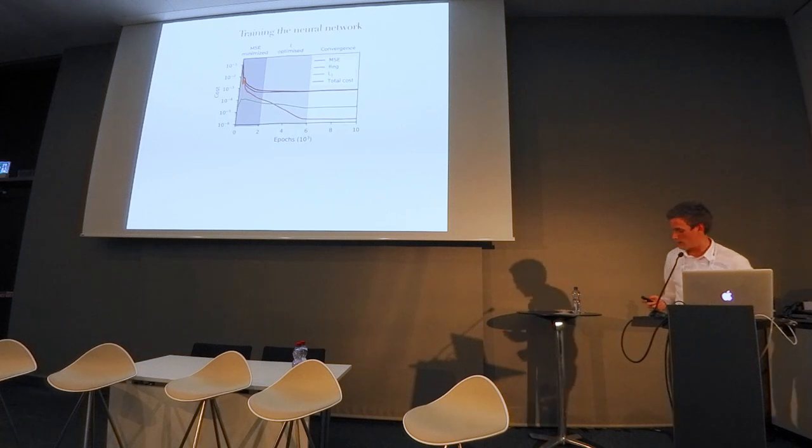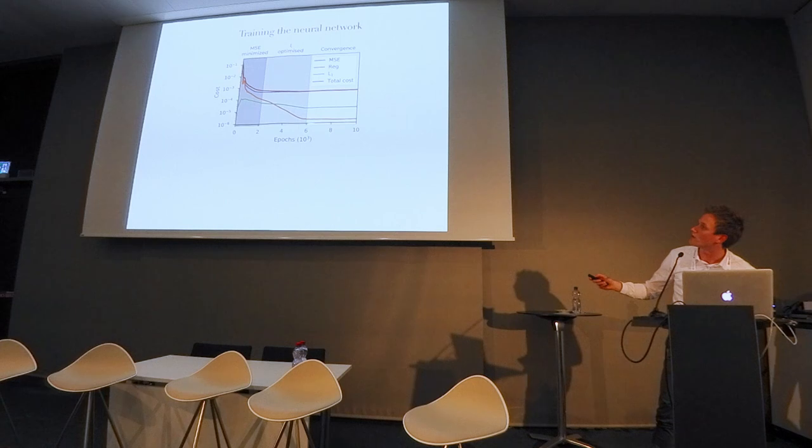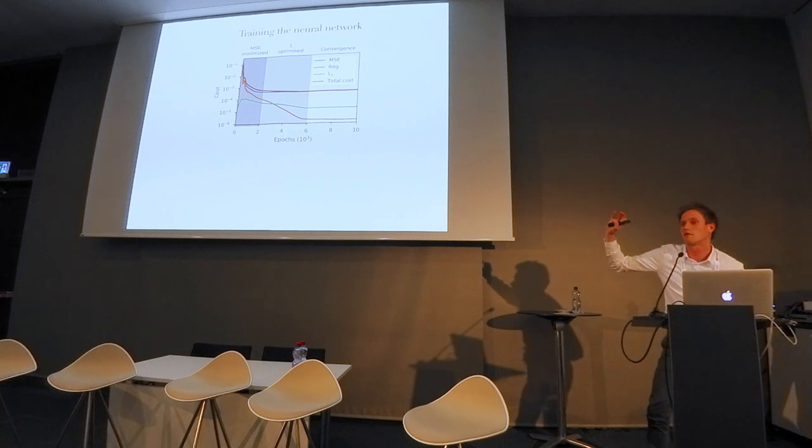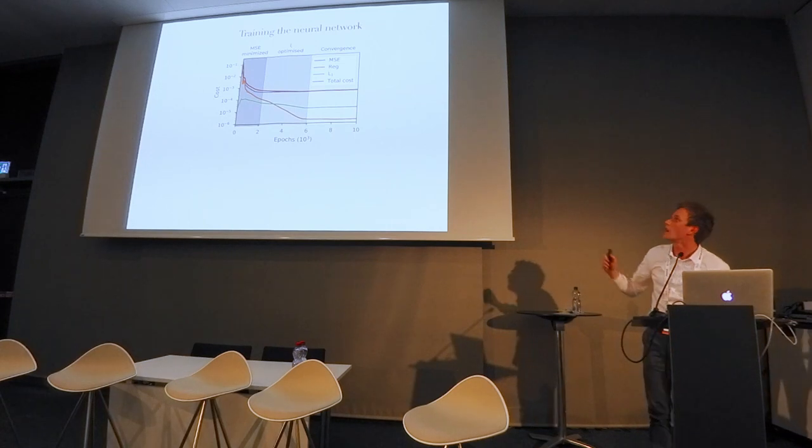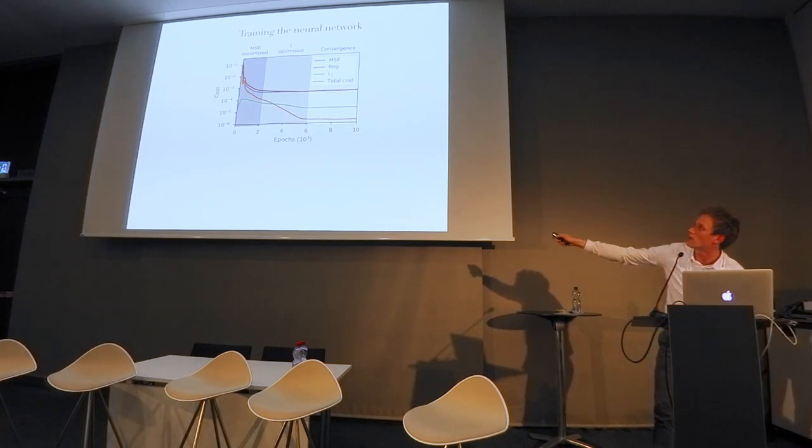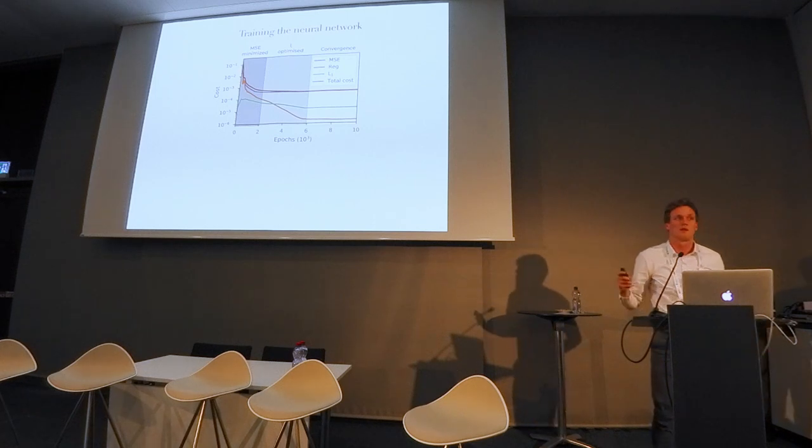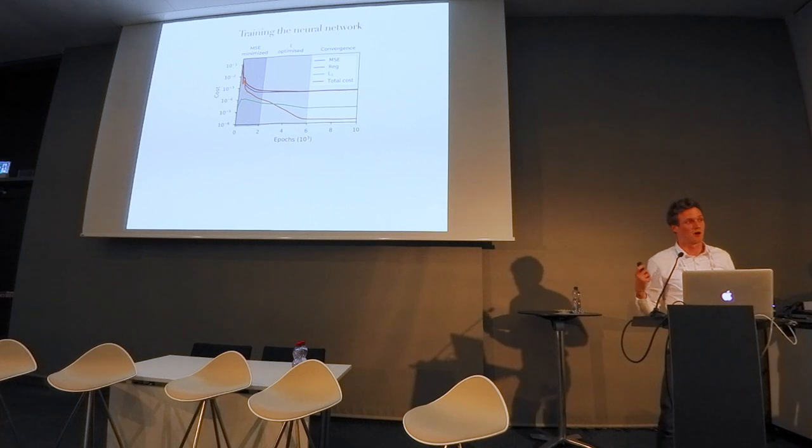What happens during training? Here I plot the different cost functions as function of the number of training epochs. Let's focus on two lines: the blue line which is the MSE, the mean square error part, and the orange line which is the regression part. You can see that initially the MSE gets optimized and at some point starts to saturate, and the regression term only really starts to become optimized once the mean square error is already optimized, which makes sense.